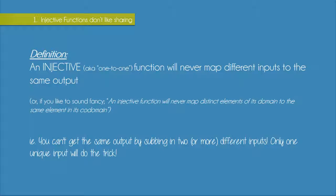So here we have a more official definition of an injective function. An injective function, which is also called a one to one function, will never map different inputs to the same output. We could also phrase that slightly differently and say that an injective function will never map distinct elements of its domain to the same element in its codomain. Remember that the domain is just a set of inputs and the codomain is a set of possible outputs.